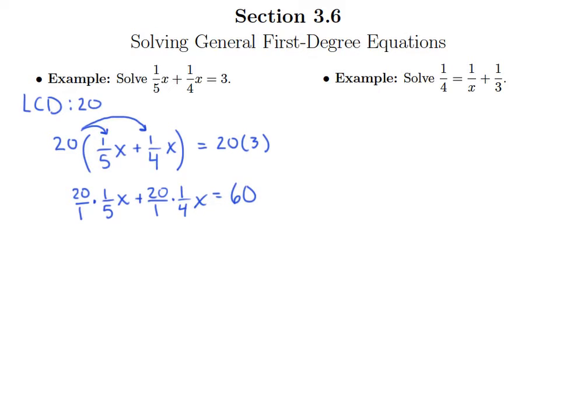And so just like we know should happen we can cancel and get 4 when we take 20 over 5, and 20 divided by 4 is 5, 4 divided by 4 is 1. And so what we have now is 4x plus 5x equals 60. So no more fractions.